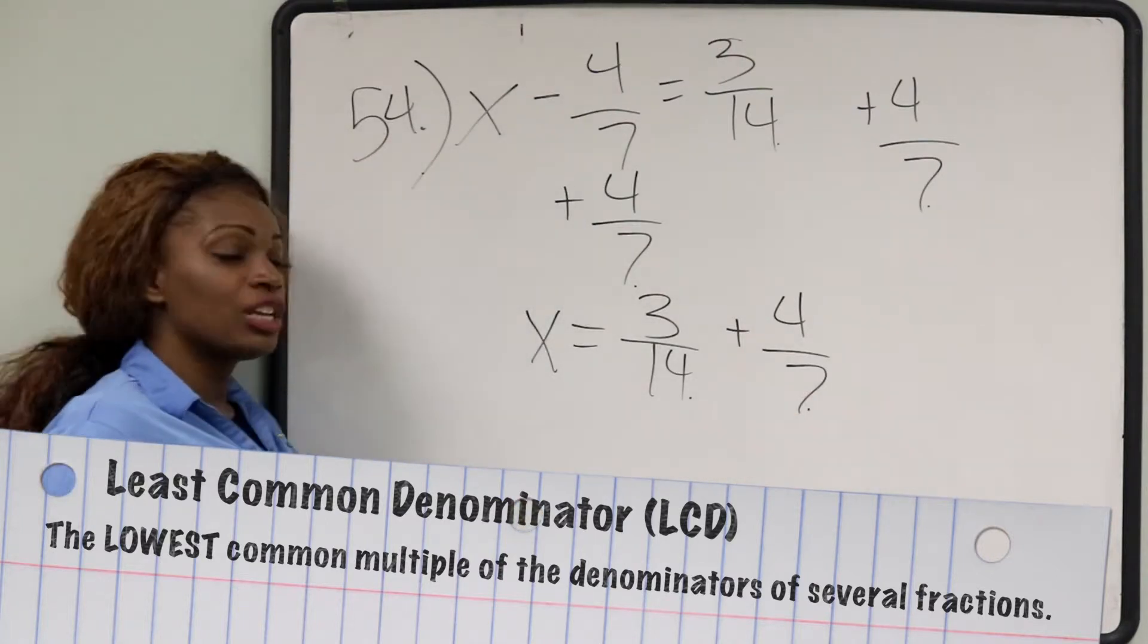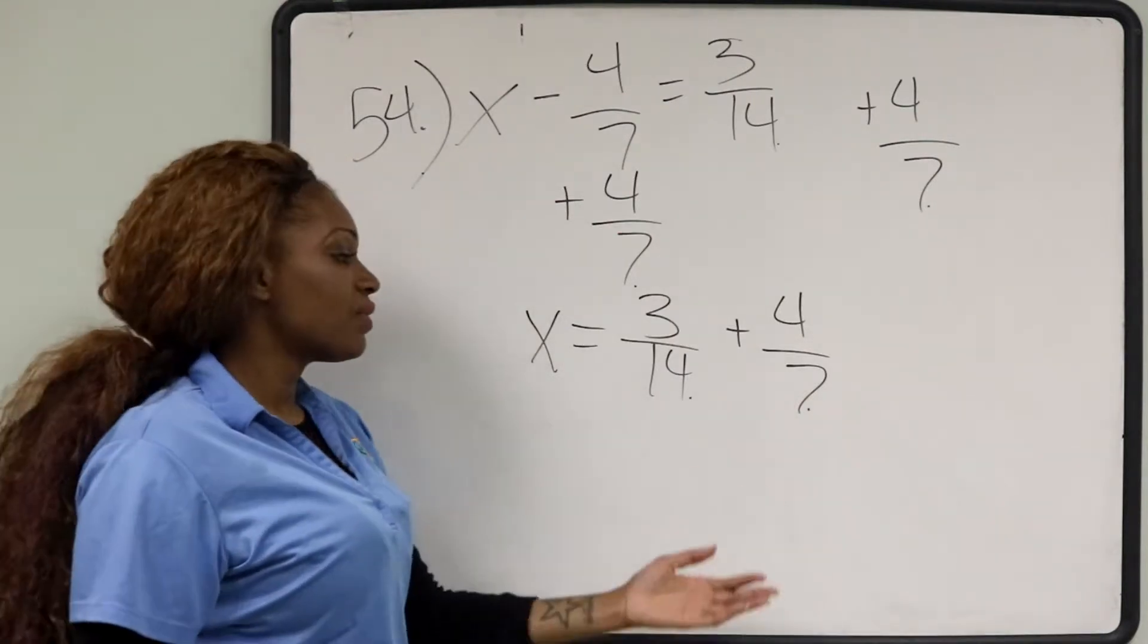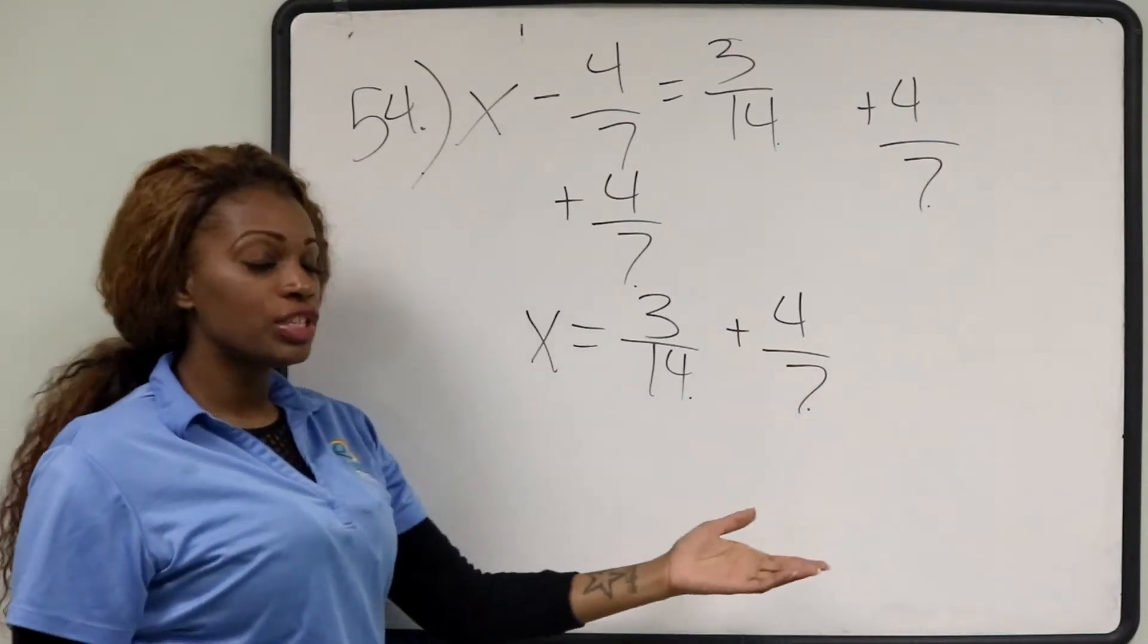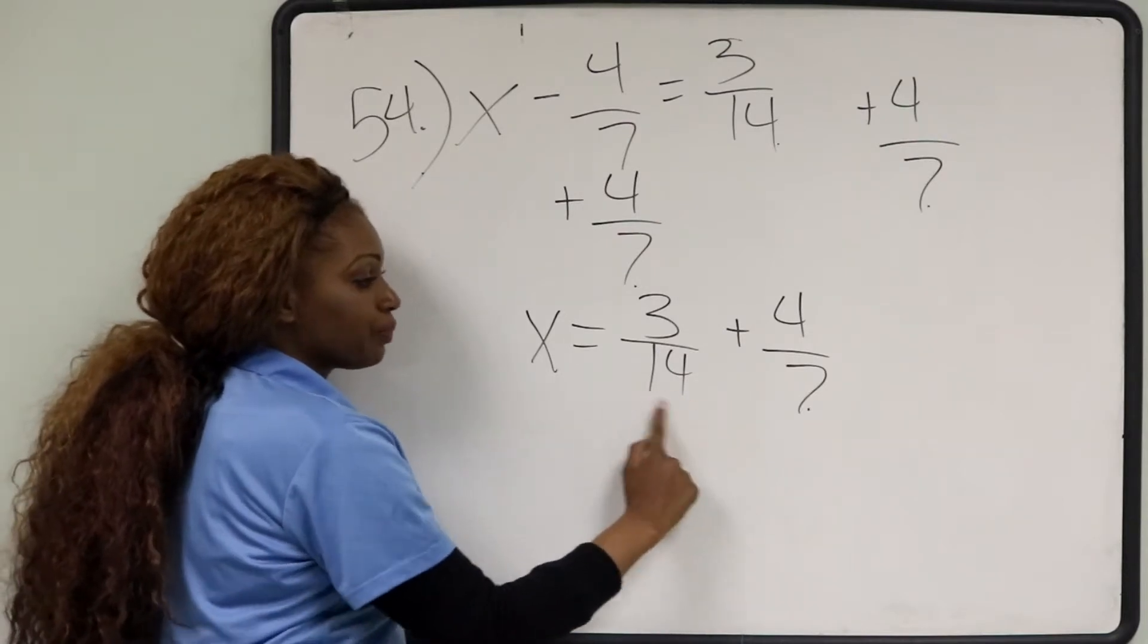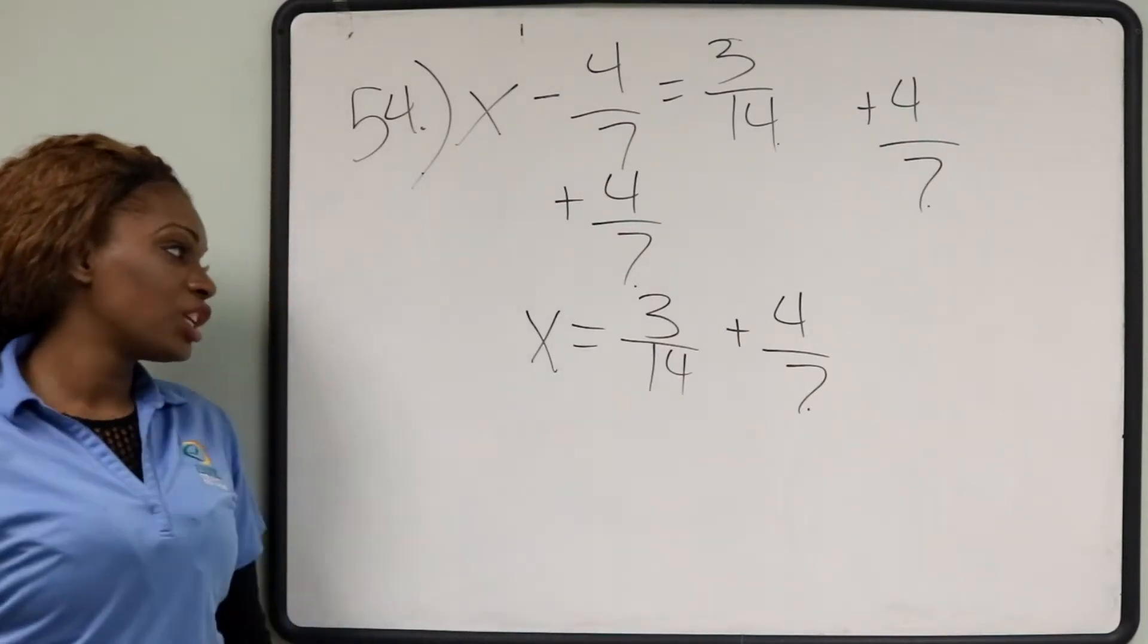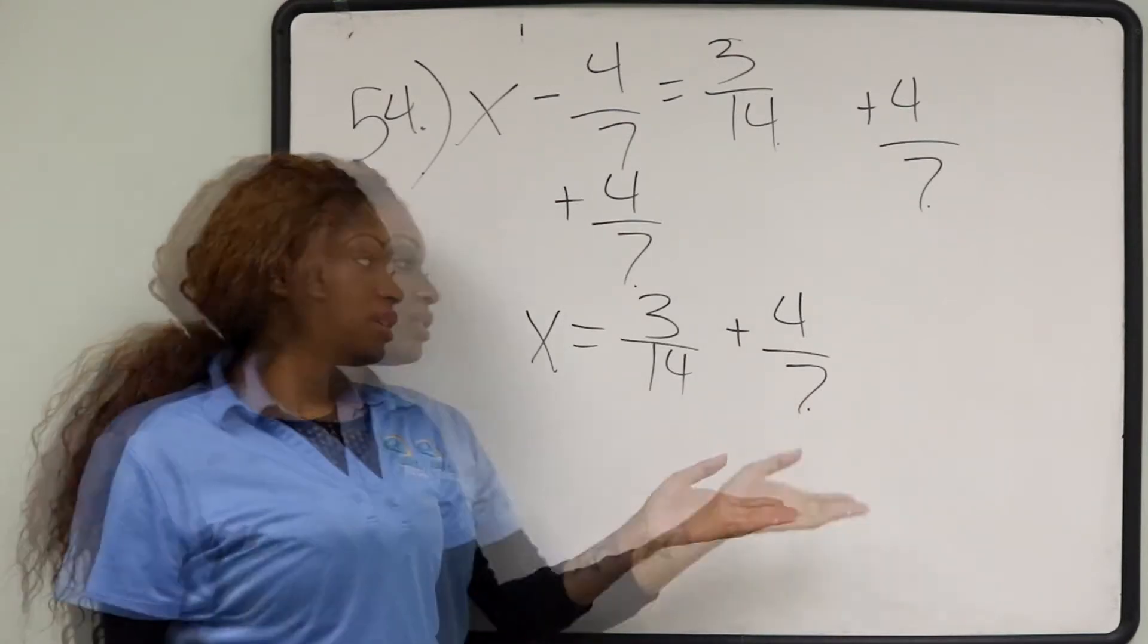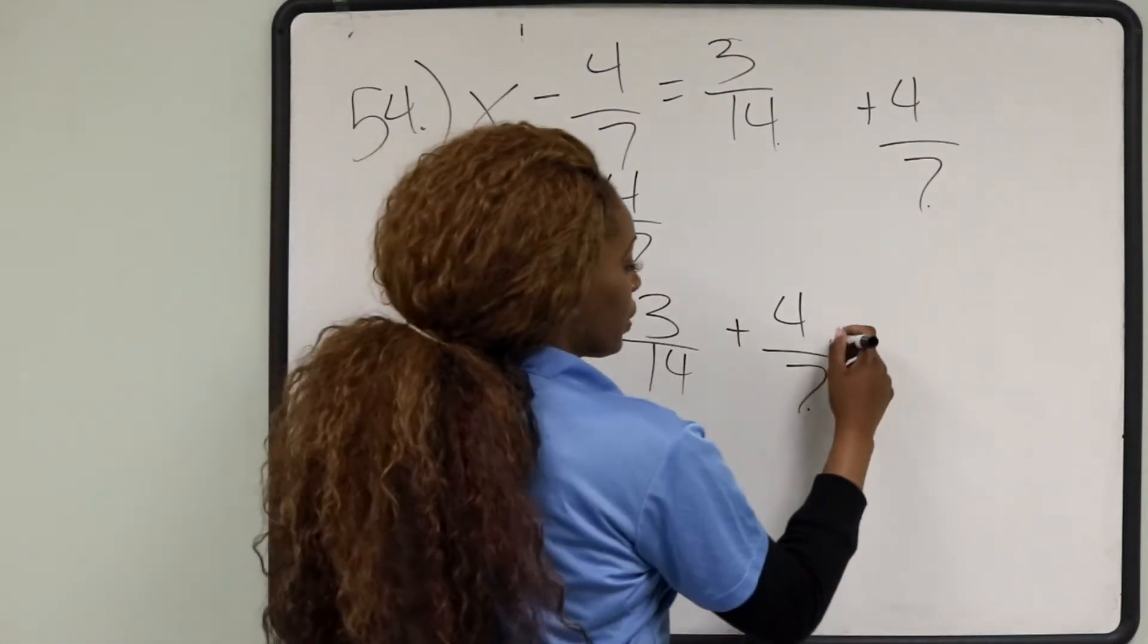What you normally can do is factor. We would do factors of 7. 7 times 1 is 7, 7 times 2 is 14. 14 would be perfect to use because then we have a 14 here. So all we want to do is change 4 7ths to a fraction equivalent to 14 in the denominator. So I'm going to take 4 7ths, I'm going to put an equal value,